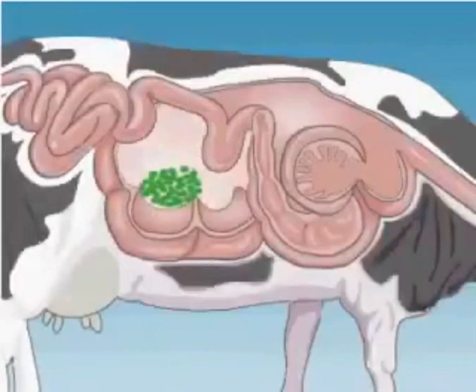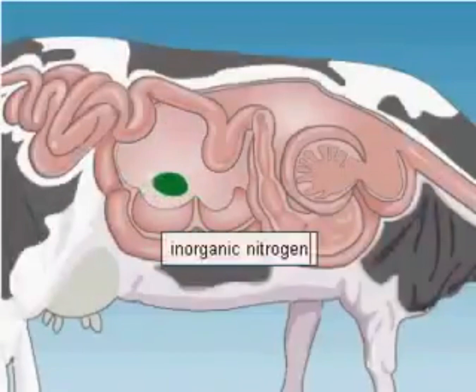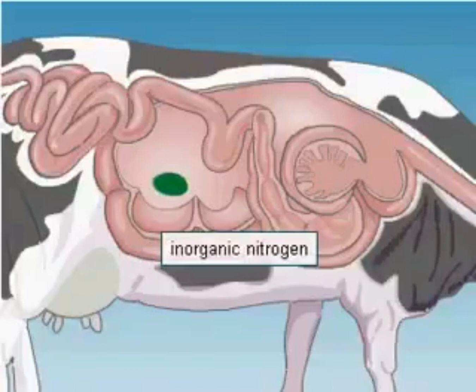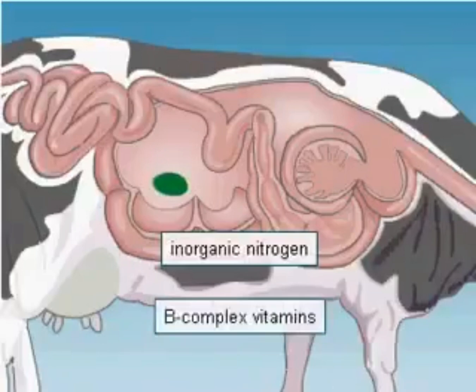The rumen bacteria also bind inorganic nitrogen and incorporate it into their own proteins. These bacteria also synthesize B-complex vitamins.